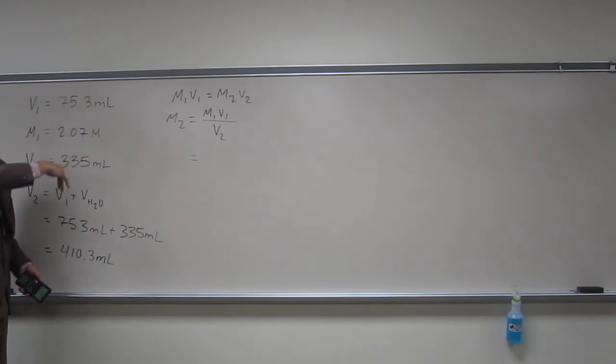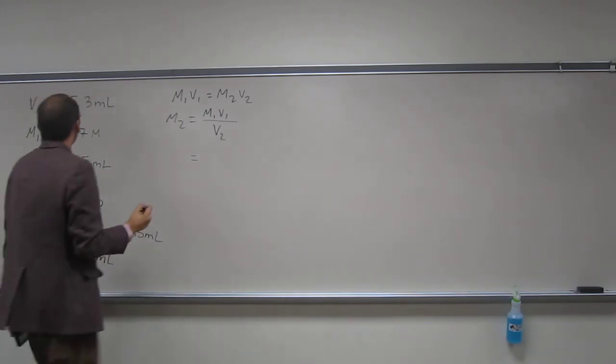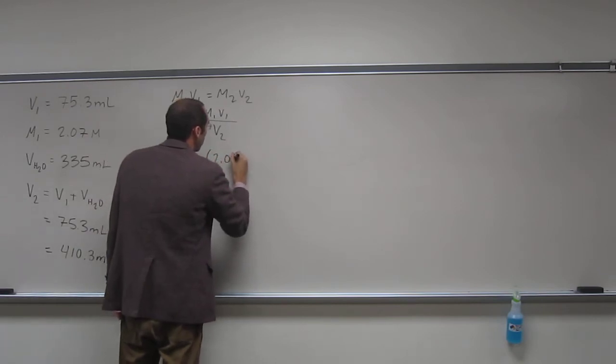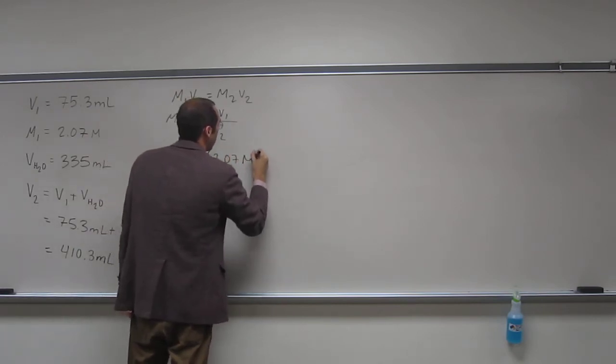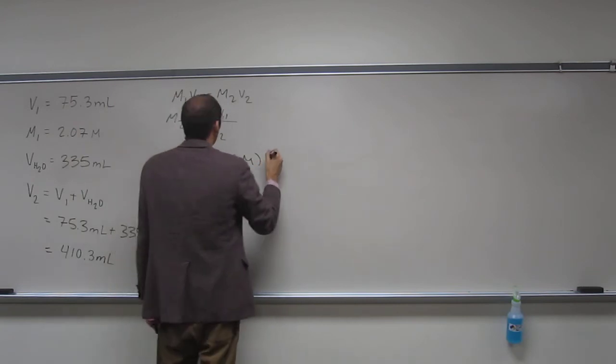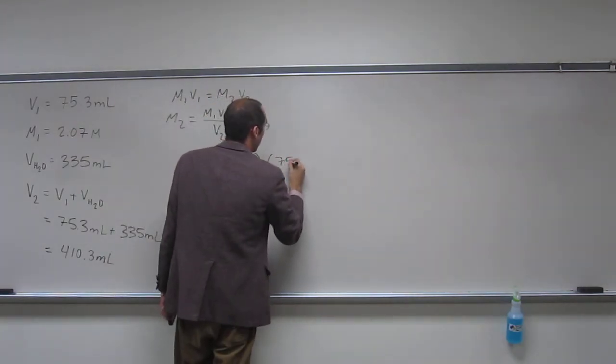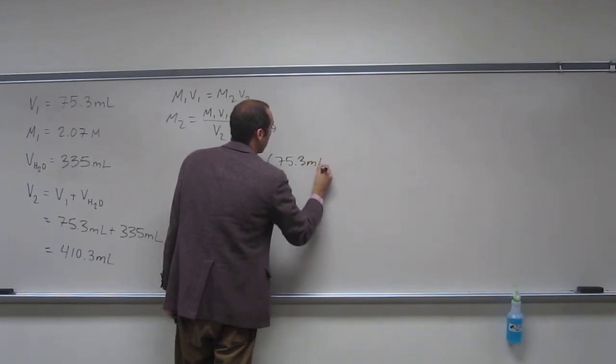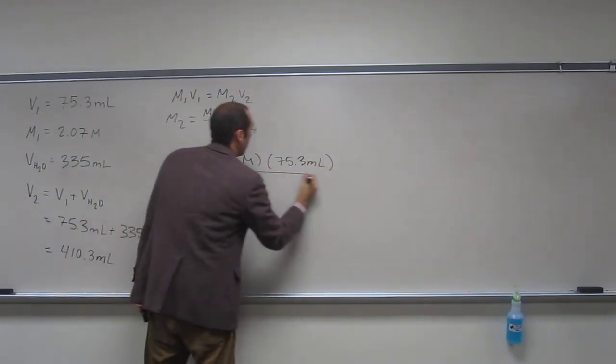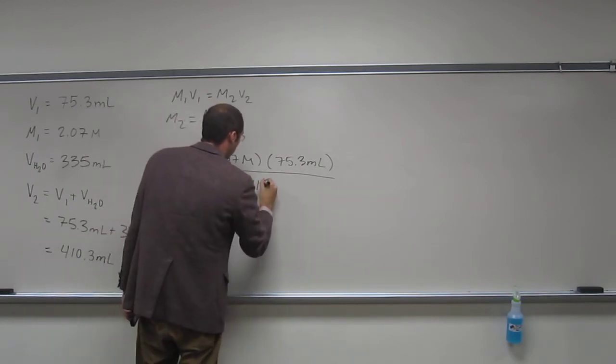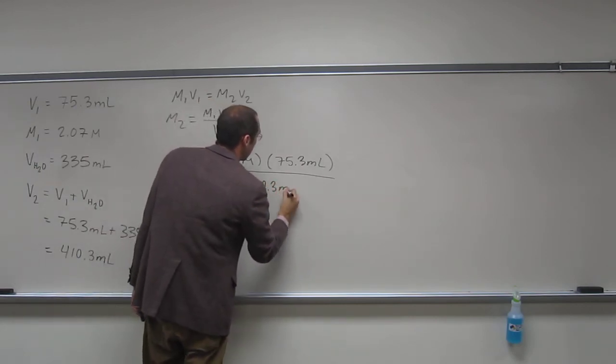If these units are in the same unit, you can just cancel them. So, molarity 1, 2.07 molar. V1, 75.3 mils, divided by V2, 410.3 mils.